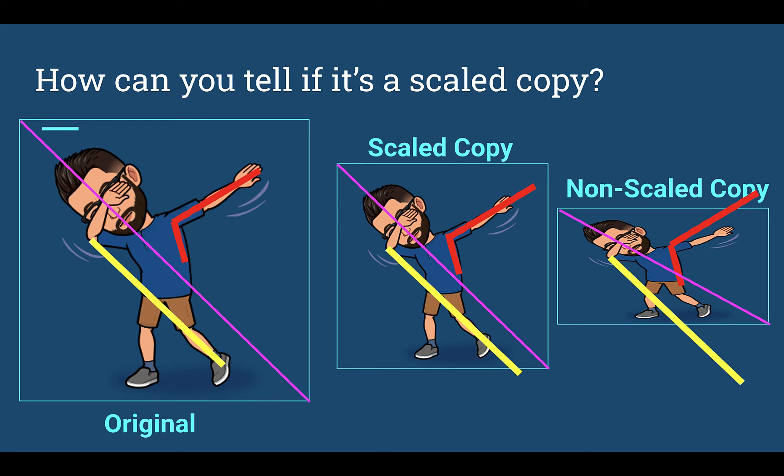Looking at the non-scale copy, I just copied and pasted it over, so I didn't rotate it at all. Now, it went from an elbow, but it doesn't go through that leg anymore. Something's off.